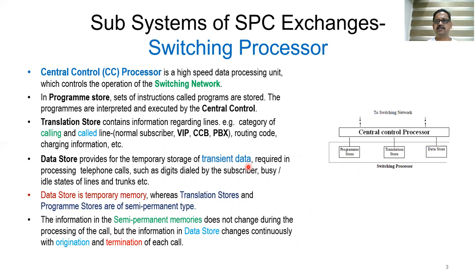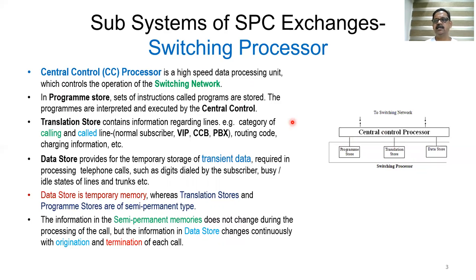Looking at the subsystems of SPC exchanges and the switching processor: the central control processor is a high-speed data processing unit which controls the operation of the switching network.